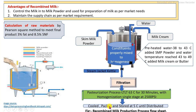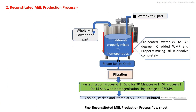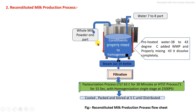The second process is reconstituted milk production. In the mixing tank, water is first loaded as per the required quantity and preheated to 38 to 43 degrees Celsius. Then whole milk powder is added to the water in a ratio of one part whole milk powder to seven to eight parts water. After that, the constituents are properly mixed and passed into the filtration process.